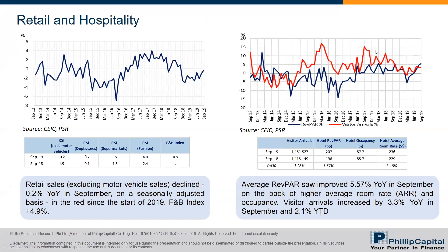In terms of market data, the RSI is still in the red, close to breaking into green territory at negative 0.2%. What is pulling up the RSI is the F&B index, which has been consistently positive — up 4.9% for September 2019. For tourism data, the start of 3Q was a very strong start, with international visitor arrivals increasing 3.3% year-on-year in September, and for the full year visitor arrivals were up 2.1%.